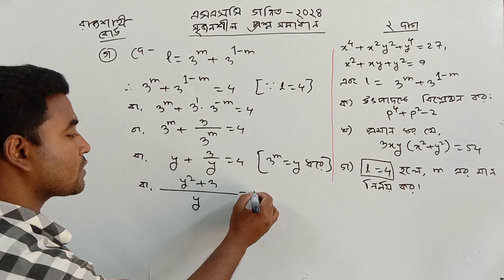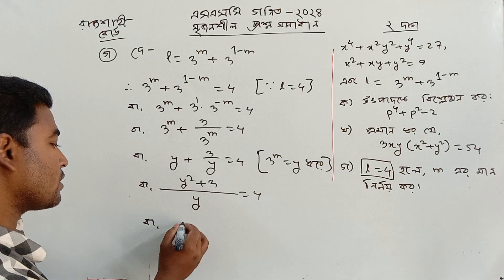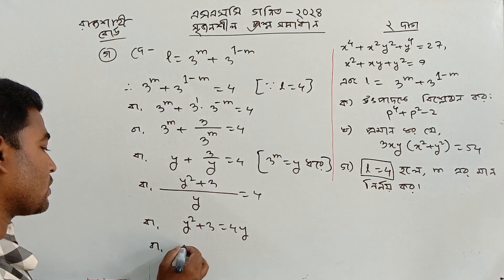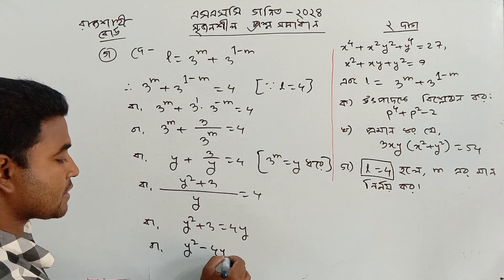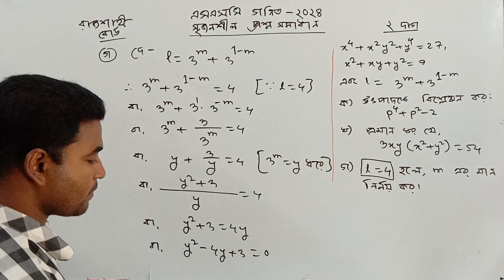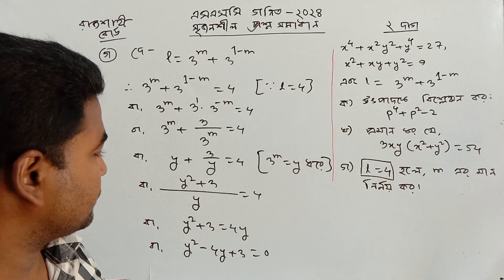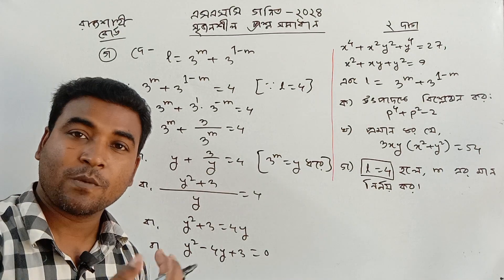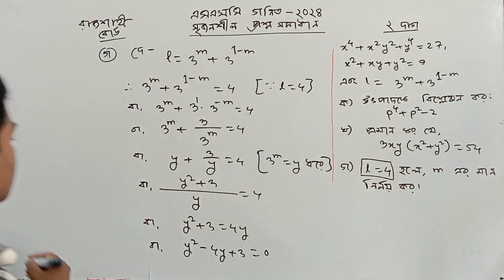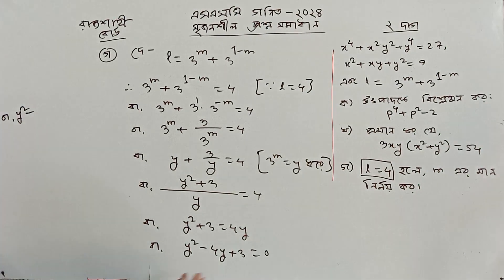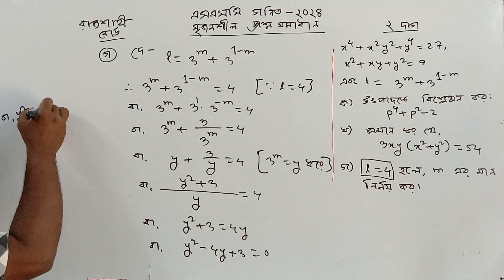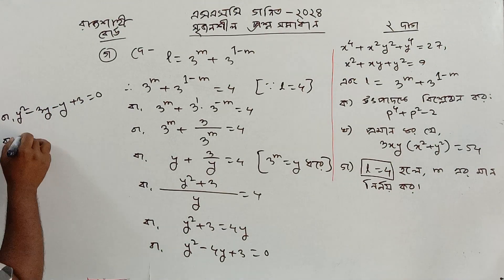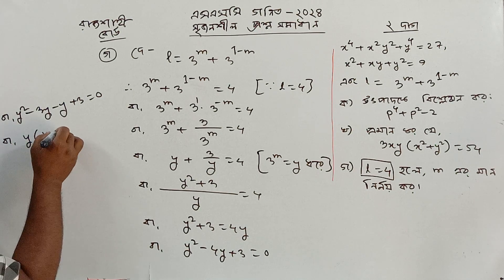What does y mean? y² plus 3 equal to 4, and y² plus 3 equal to 4y, so y² minus 4y plus 3 equal to 0. This is the middle term. We split it: 3y minus y, giving y(y minus 3) minus 1(y minus 3) equal to 0.